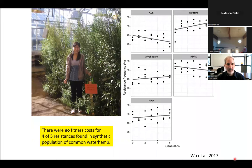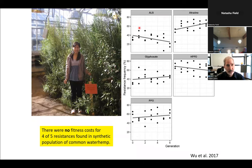The only resistance this population doesn't have is glyphosate resistance, which the neighbors have. It's only a matter of time before this population is beyond chemical control. We decided to recreate the resistances in that population in a common genetic background and study the fitness cost. There was only one trait — ALS resistance — for which there was any fitness cost. For the others, they either stayed the same or increased over time in the absence of selection.